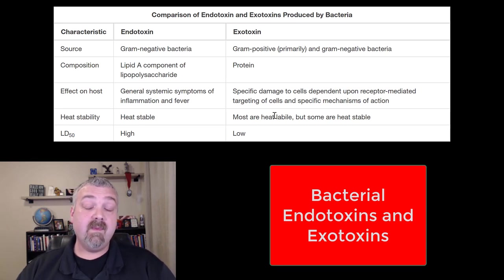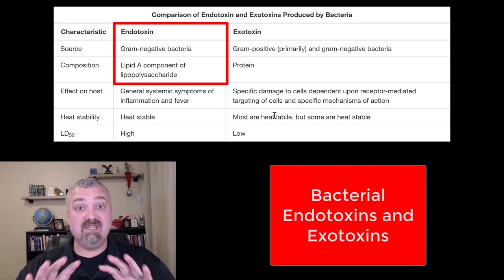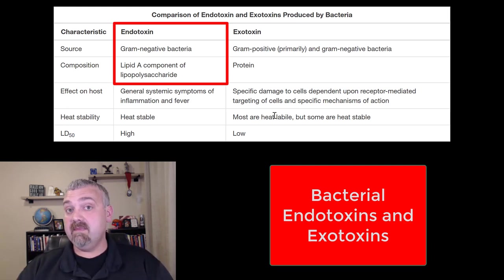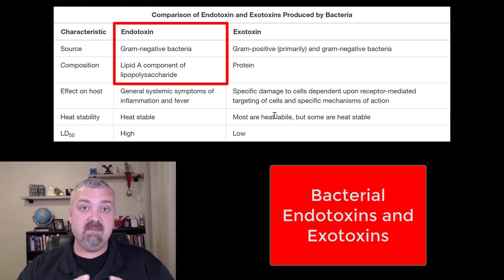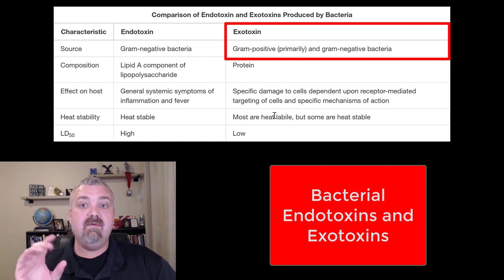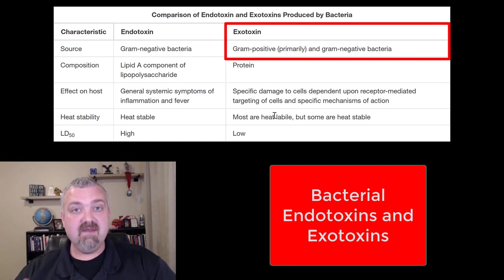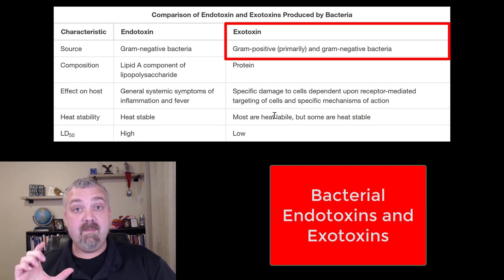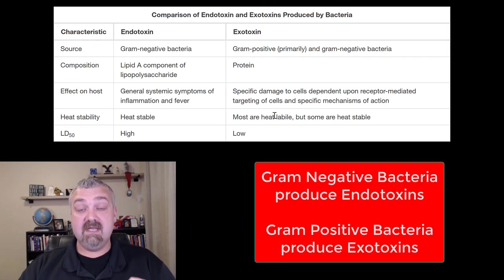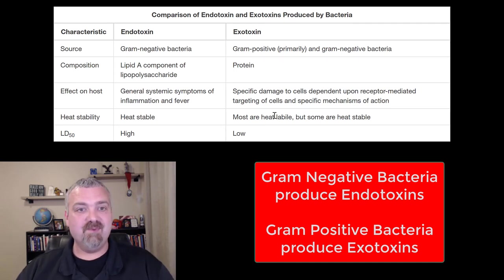Endotoxins are actually built into the lipid outer membrane of gram-negative bacteria, so endotoxins are produced by gram-negative bacteria. Exotoxins — now there are some gram-negatives that produce these, but when you hear hooves, think horses: gram-positive bacteria produce exotoxins. So just think endotoxins = gram-negative, exotoxins = gram-positive. That's almost always true.